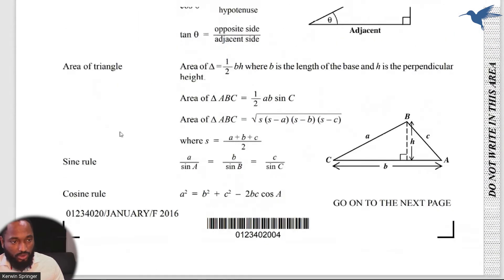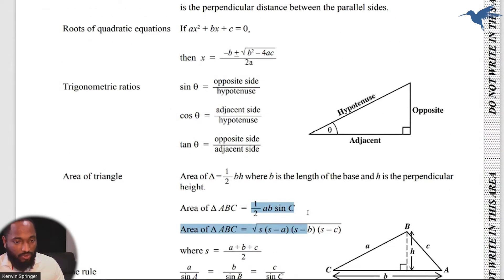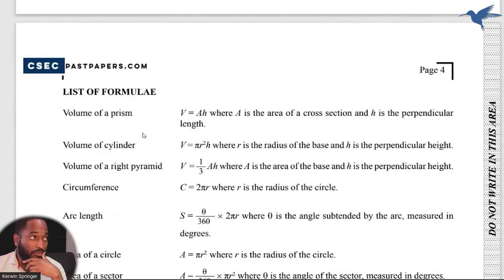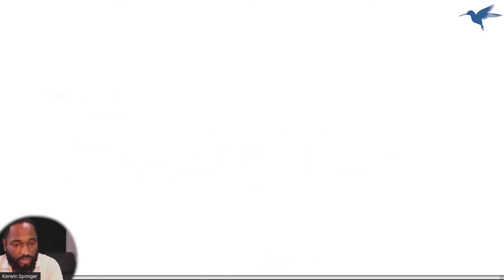If you look through the list of formulas, we've seen cosine rule, sine rule, half ab sine C, but what we are not seeing is anything on simple interest or compound interest formula. Which is why I tell you to memorize your compound interest formula. Now let's take a little look at the formula for simple interest. Simple interest is principle by rate by time over 100.